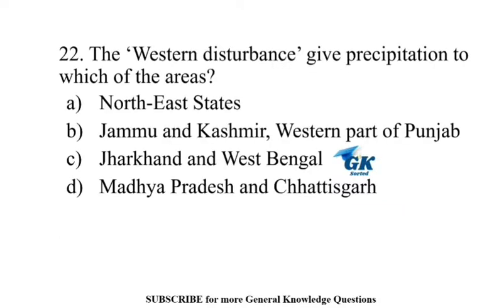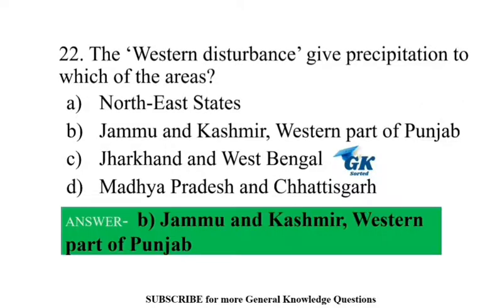The western disturbance gives precipitation to which areas? Jammu and Kashmir and the western part of Punjab.